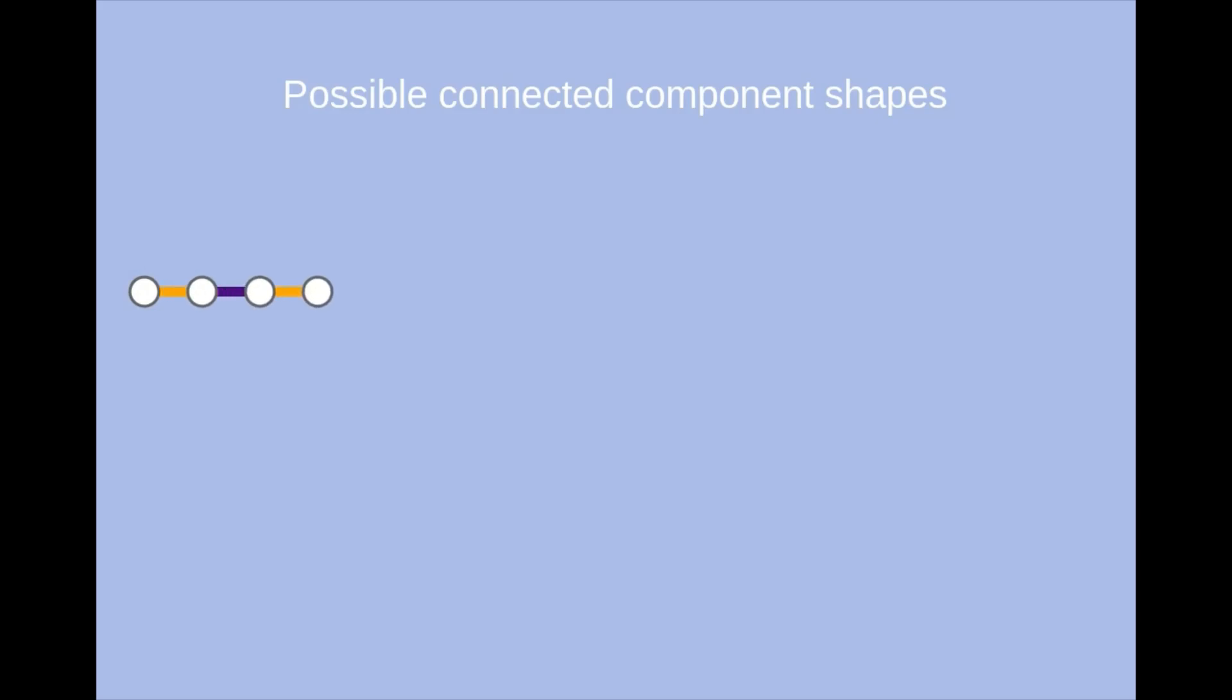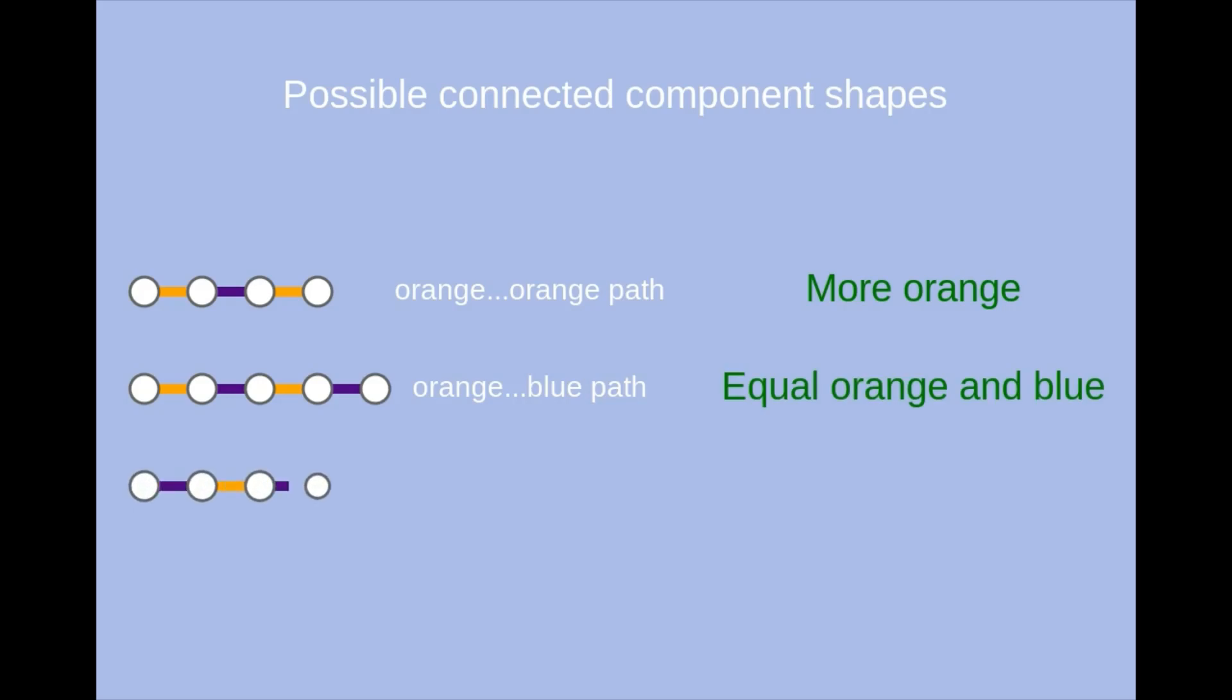So by process of elimination, we know that the only connected components which account for the difference in size between s and b are the paths. At least one of the paths must have more blue edges than orange edges, if we're to have any hope of there being more blue edges than orange edges overall.